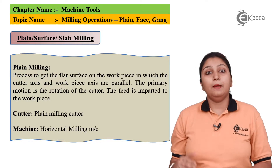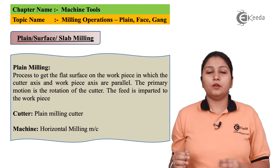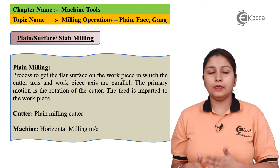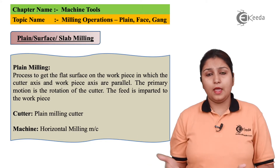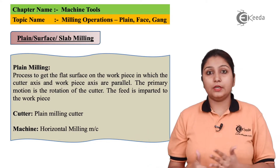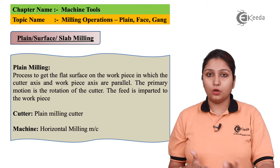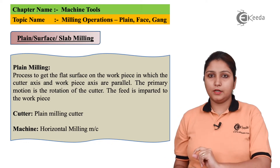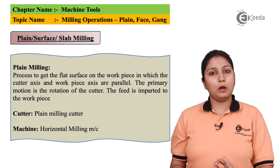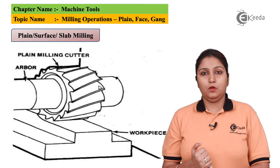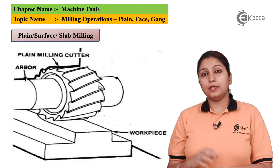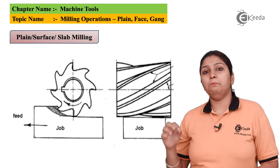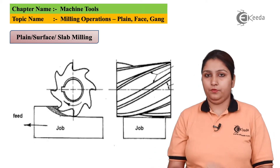First, I will talk about plane milling operation. In the picture you can easily see plane milling can be done on any surface — it can be a vertical surface or a horizontal surface — by using a plane milling cutter which is horizontally mounted on your arbor. In this diagram we can see there is a cutter which is used to remove the material from a plane surface.